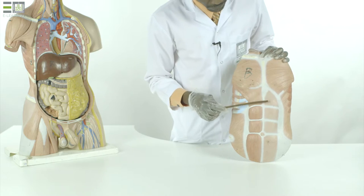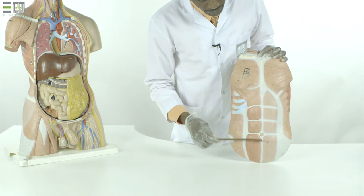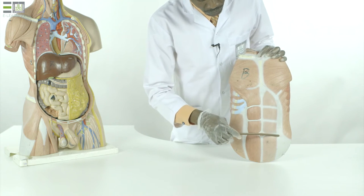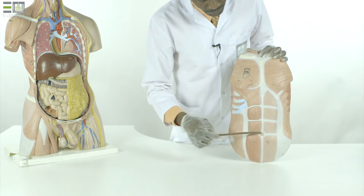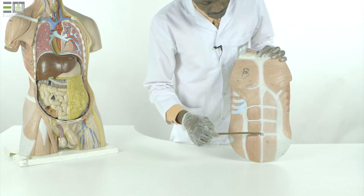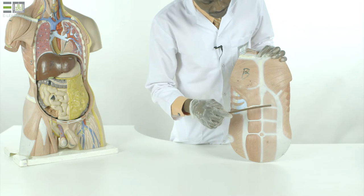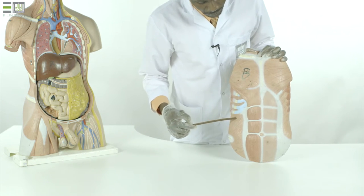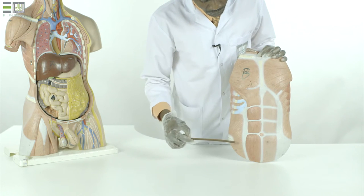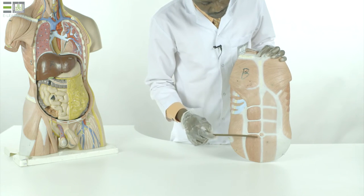For descriptive purposes, our anterior abdominal wall is subdivided by vertical and transverse lines passing through the umbilicus into four quadrants: upper left, upper right, lower left, and lower right regions.